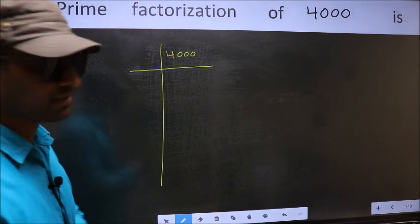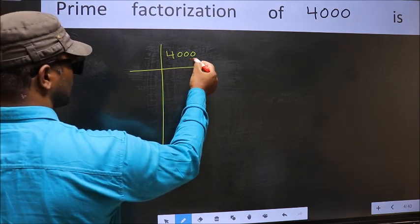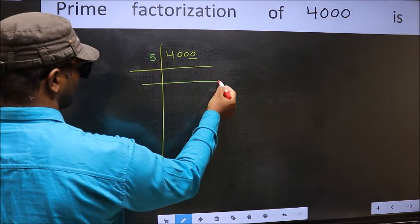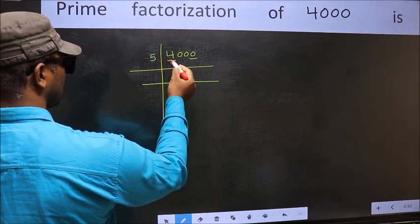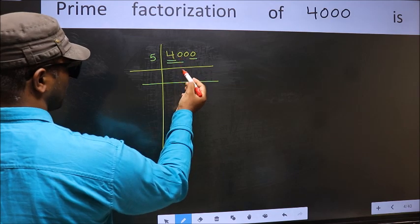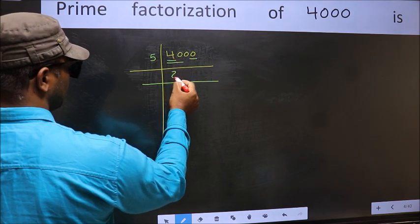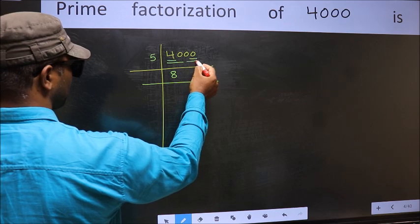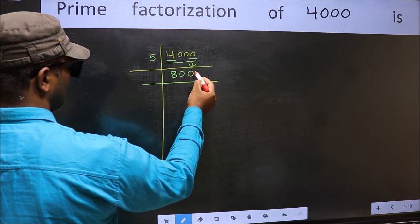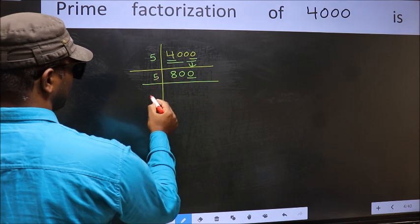Next, in this number, the last digit is 0, so take 5. First number 4 is smaller than 5, so take two numbers: 40. When do we get 40 in the 5 table? 5 × 8 is 40. These two 0s go down as is.